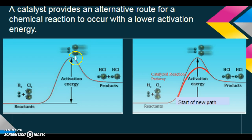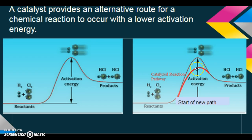So instead of the reactants having to go way up to this energy level, instead we have the start of a new path because we have our catalyst there. It made a new pathway — let's go through the tunnel instead of going way up to the top of the mountain. We only need this much energy, and then you make the products. So you can see this is still endothermic because the products have more energy than the reactants, but instead of needing this high activation energy, we only needed this much — not much more than what the products have. We had a new path, and therefore, we used our catalyst.